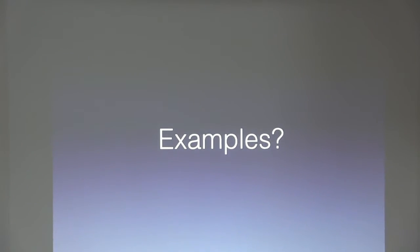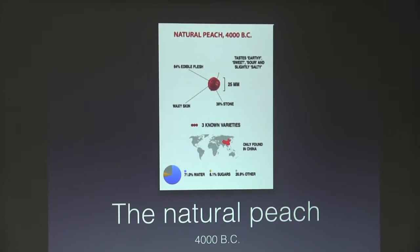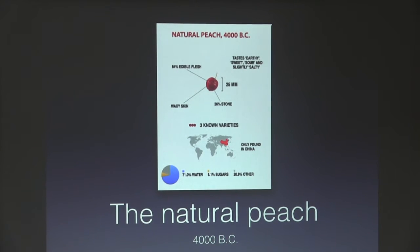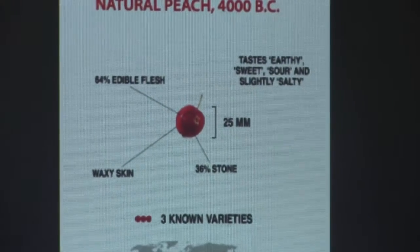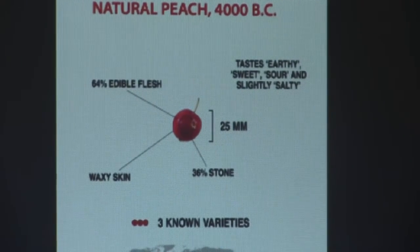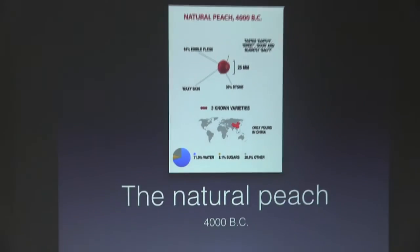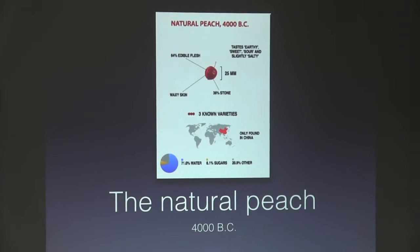Let's look at a natural peach from 4000 BC. This is a natural peach — I know it doesn't look like a peach, it looks more like a grape and cherry mixed together, but it is a peach genetically. It's only 25 millimeters big, has 64% edible flesh, very waxy skin, and it's 36% stone. It tastes earthy, sweet, sour, and a little bit salty sometimes. It would not be at all pleasant to eat. There are only three known varieties, found only in China, and they're 71% water, 8% sugars, and 21% other substances.